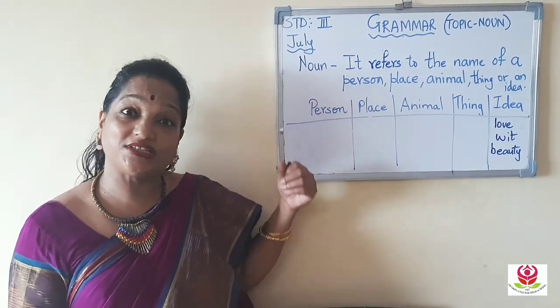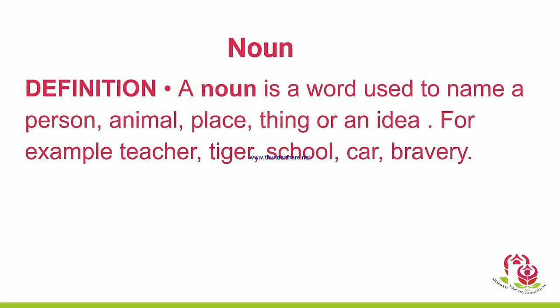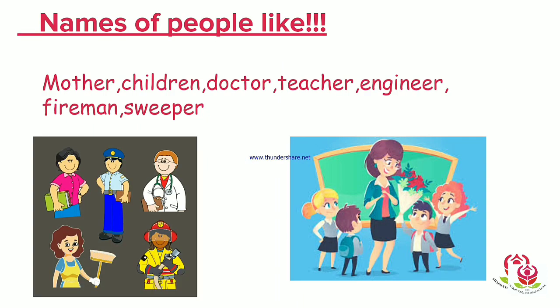Now let's revise with some pictures. A noun is a word used to name a person, animal, place, thing, or an idea. For example: teacher, tiger, school, car, bravery. Now let's look at names of people — like mother, children, doctor, teacher, engineer, fireman, sweeper. Students, you can see the picture of a person on this slide. Just watch carefully.